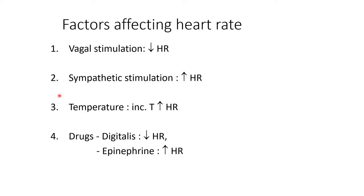When vagal stimulation is increased more than usual, it can lead to further lowering of the heart rate below the normal range — that is, less than 60 beats per minute. However, in trained athletes, a heart rate of less than 60 beats per minute is normal because it is a physiological adaptation that helps the heart pump more effectively.